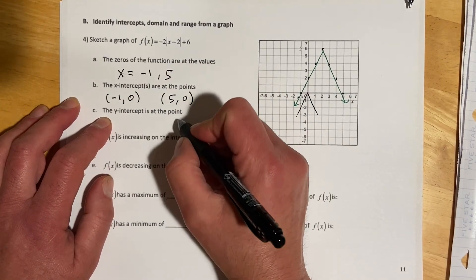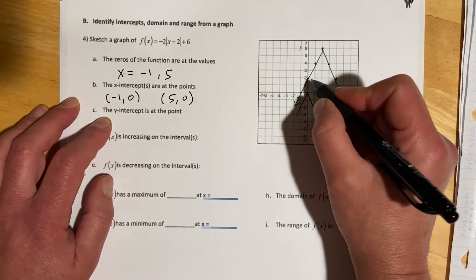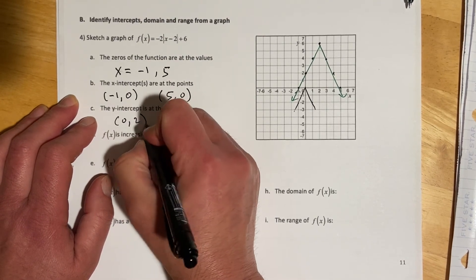The y-intercept is at the point. If it says point, it wants ordered pairs; if it says values, it's looking for a list. The y-intercept is 2, so that's (0, 2).